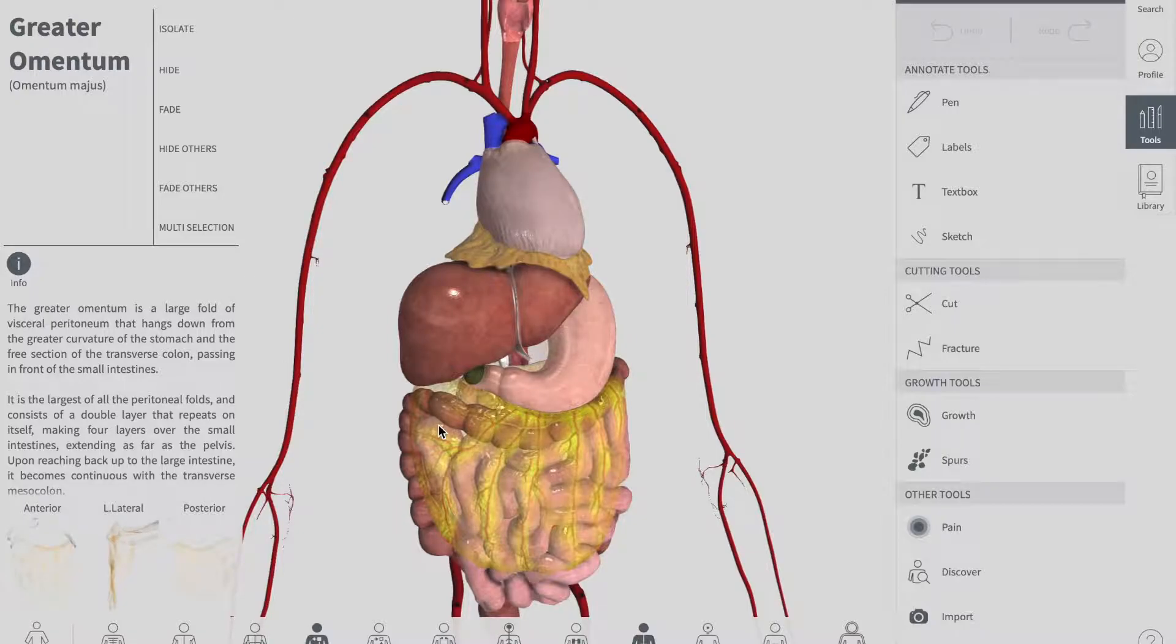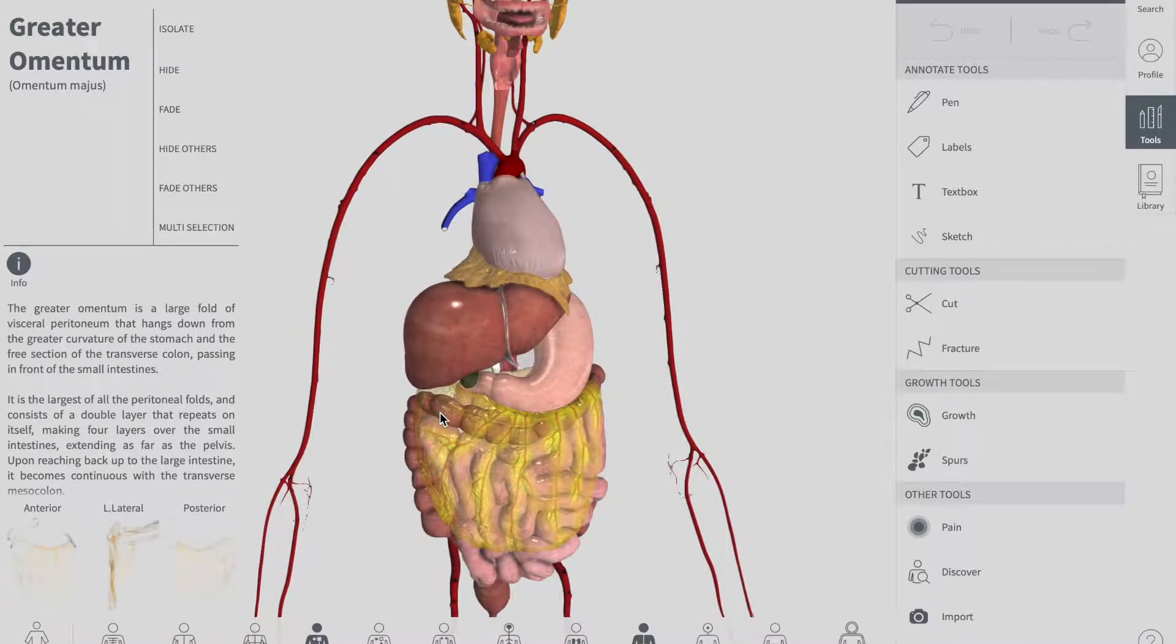The esophagus is innervated by the esophageal plexus, which is formed by parasympathetic vagal trunks and sympathetic fibers from the cervical and thoracic sympathetic trunks. The upper esophageal sphincter and upper striated muscle are supplied by fibers originating from the nucleus ambiguus.